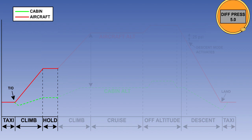If the aircraft is required to level off during the climb, the pressurization controller will sense this and level off the cabin. When the aircraft begins to climb again, the controller will once more position the outflow valves to control the rate of change of cabin altitude in proportion to the rate of climb of the aircraft. The cabin rate of climb will again normally be between 300 and 500 feet per minute.